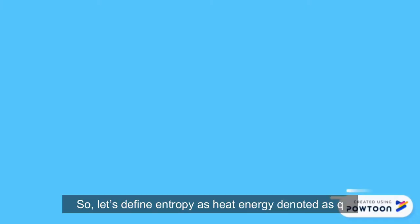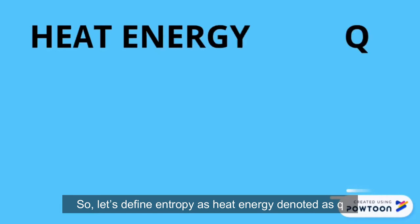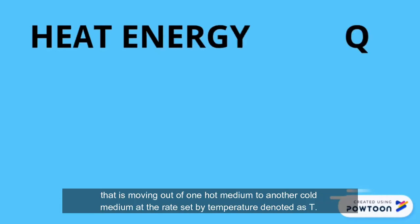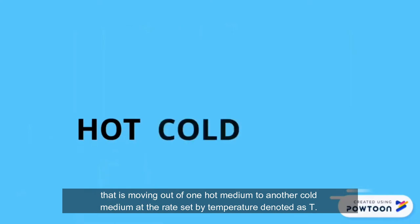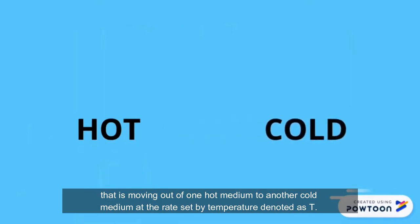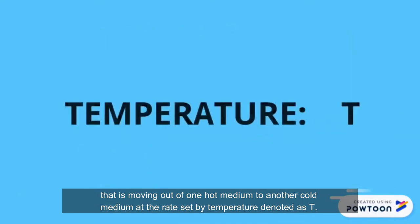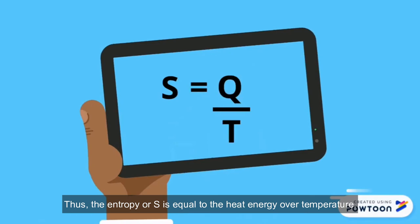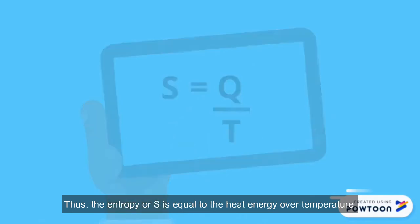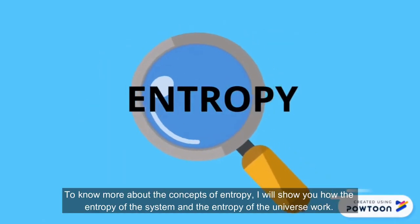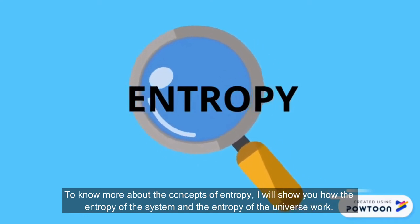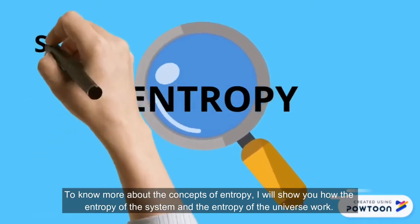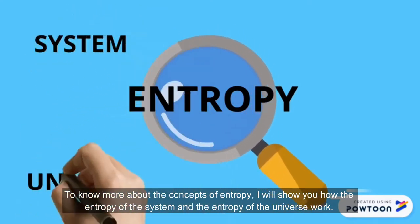So let's define entropy as heat energy denoted as Q that is moving out of one hot medium to another cold medium at the rate set by temperature denoted as T. Thus, the entropy or S is equal to the heat energy over temperature. To know more about the concepts of entropy, I will show you how the entropy of the system and the entropy of the universe work.